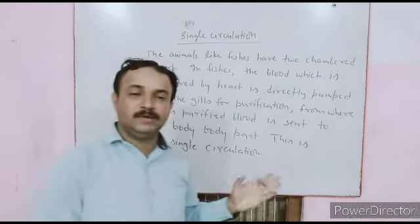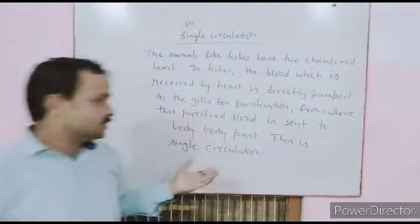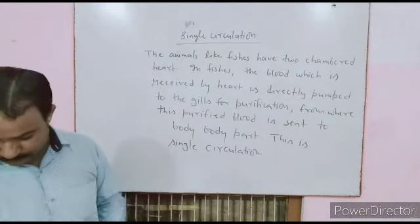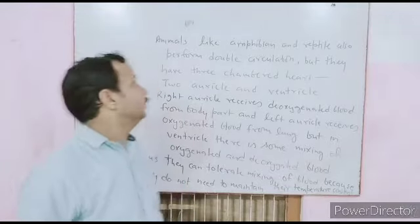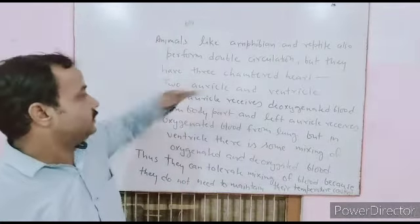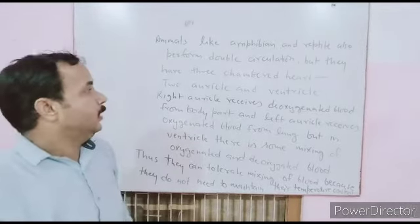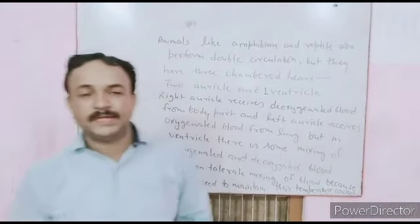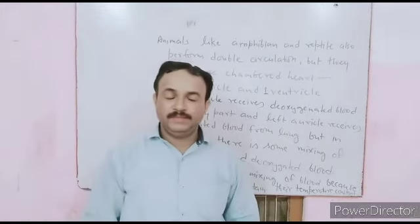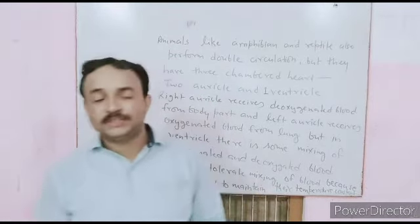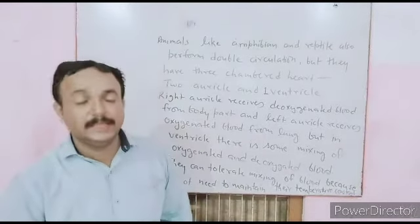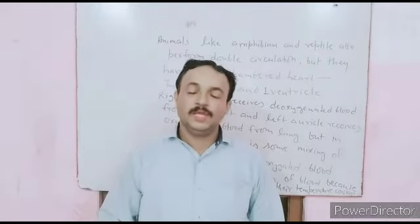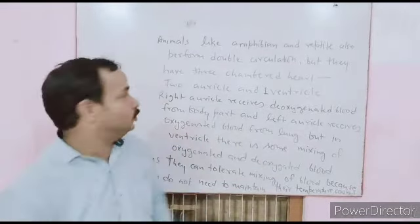In fishes, purified blood is sent to the body — this is called single circulation. Now we will see double circulation in amphibians and reptiles. Amphibians and reptiles cannot perform complete double circulation because they have three chambers.